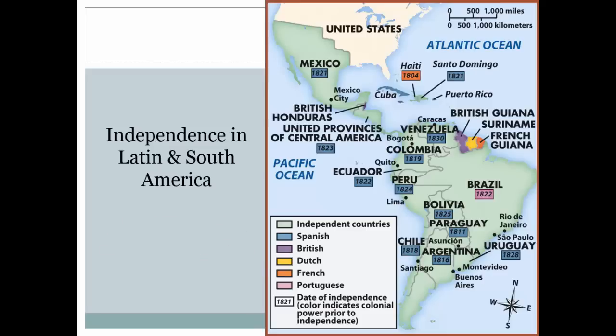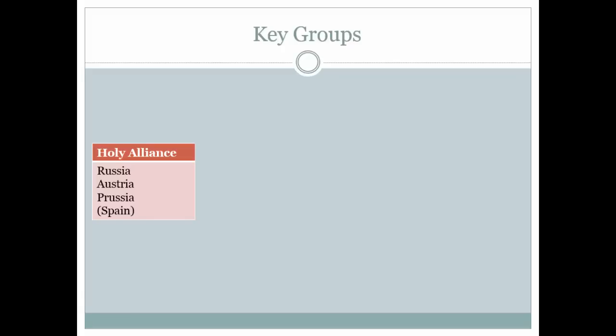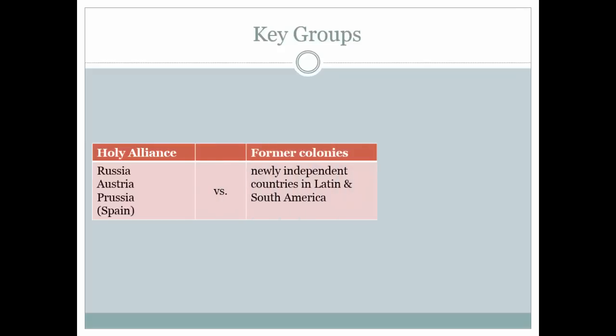The governments that lost these colonies were upset, and had hopes that they could reacquire the colonies in the future. Before they could do that, though, they had to deal with some trouble at home — the effects of the French Revolution and Napoleon. The revolution's ideas of democracy and freedom spread throughout Europe, and that really upset the monarchs and people of power in those European countries. To combat the spread of democracy, some European countries came together and formed the Holy Alliance. The Holy Alliance was primarily concerned with defending European countries from democratic ideas. Secondarily, there was talk that maybe one day they could support the reacquisition of Spain's colonies in Latin and South America.